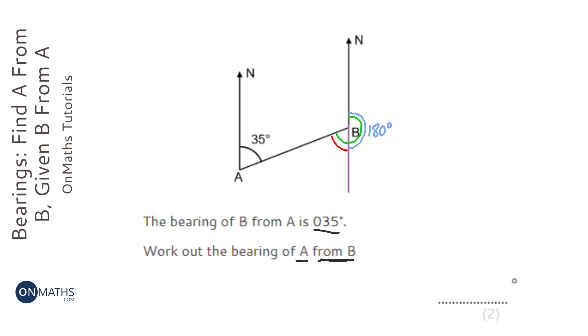Now, thinking back to the fact that the north lines are always parallel lines, we know that the 35 degrees here is going to be the same as the 35 degrees here. And that's because they're Z angles or alternate angles.